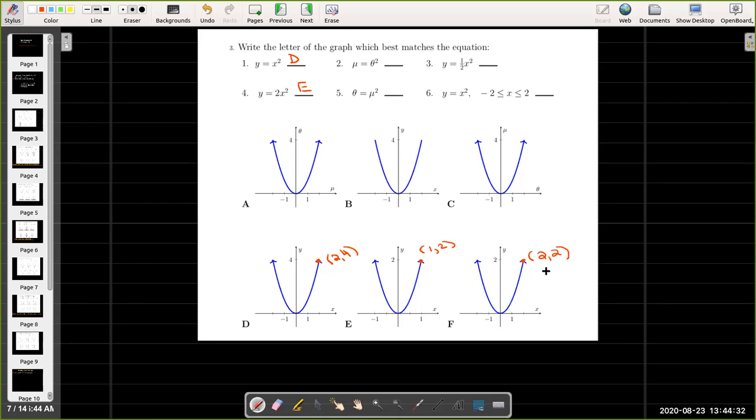And then with graph F, the point is 2 comma 2, and that satisfies equation 3. When x is 2, y will be 2 as well. So we'll pair that with equation 3 and graph F. So now we know all of the equations and how did we get there?